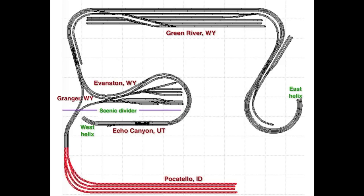The staging yard is shown in red. The Pocatello subdivision leads to the Y at Granger Wyoming where it joins the Evanston subdivision.